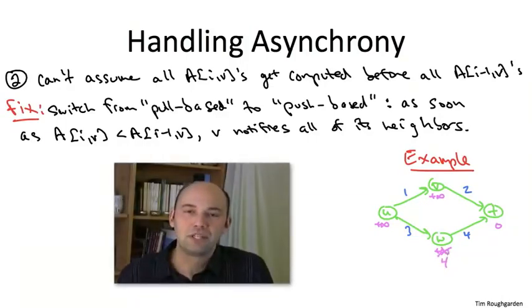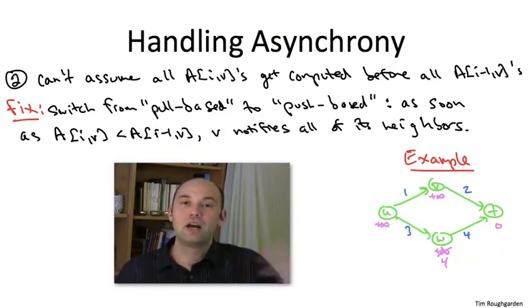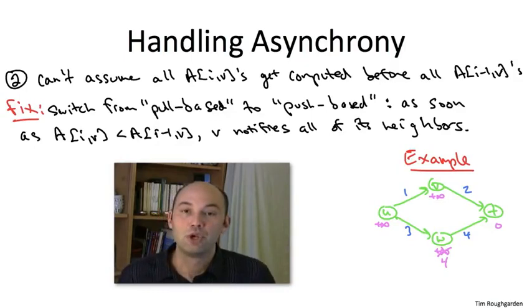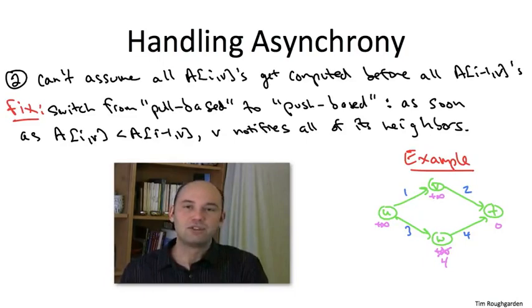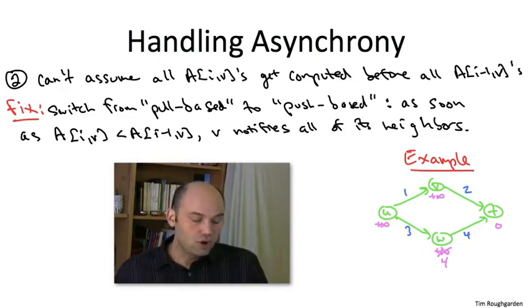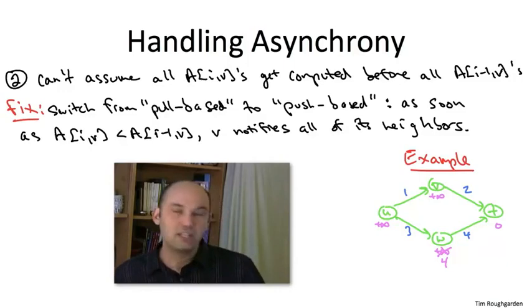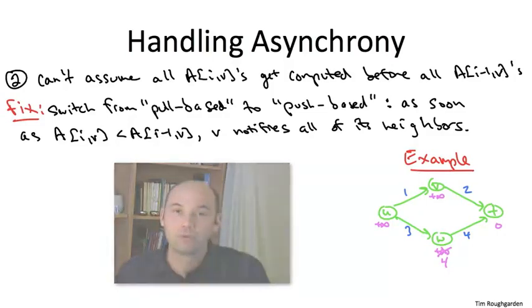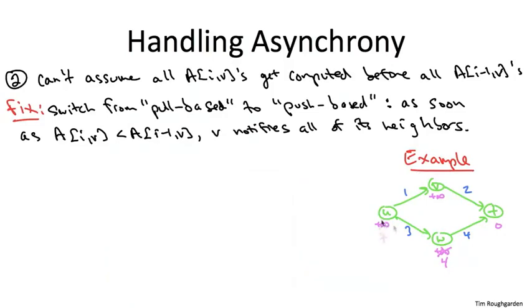So now remember we're doing this push-based implementation. So W has new information. It has a better shortest path to T. So it needs to tell all of its neighbors. So in particular, it's going to tell the neighbor U that it has a path of length four to T. And now remember, still floating around on the internet is this message from T to V advertising T's empty path from itself of length zero. But again, who knows what happens first? Maybe in fact, W's message to U arrives before T's message to V arrives. So then, U's going to say, oh, cool. Well, if from W to T has cost only four, I can get to W with cost only three, so that gives me a path of length seven all the way to T.